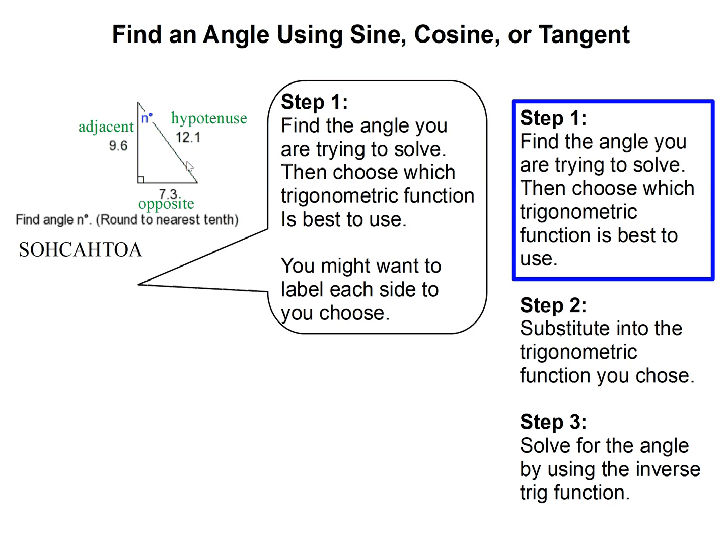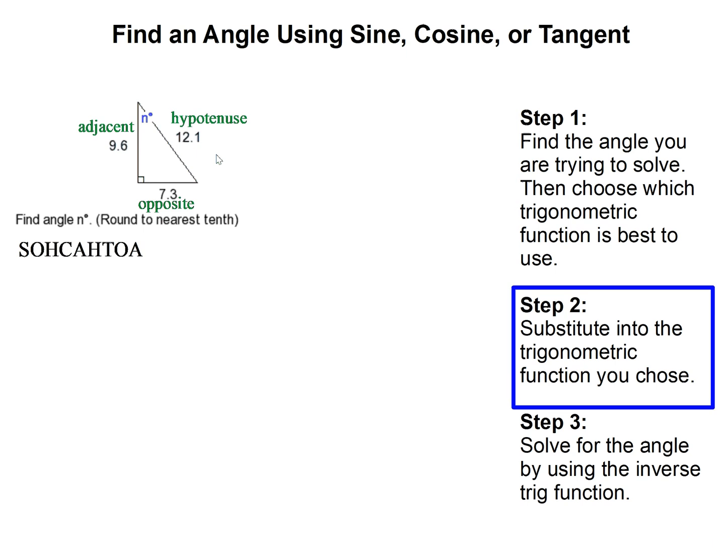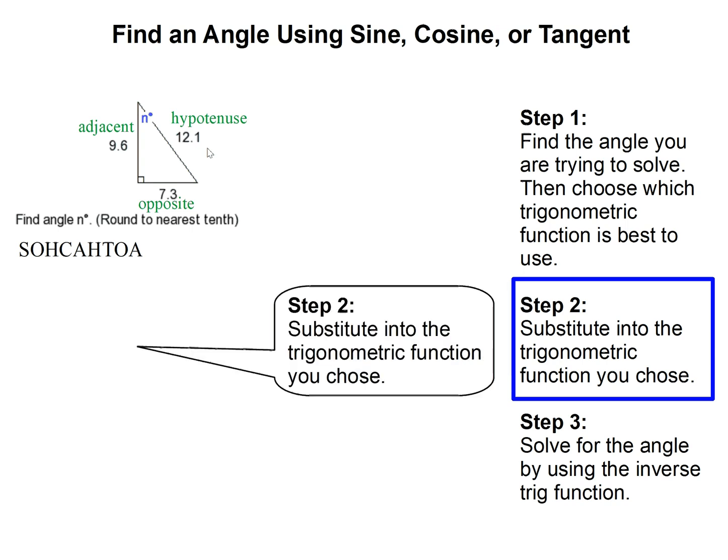Sometimes people like to label the sides, but after you do it a few times you'll be able to recognize it right away. Then what you're going to do is substitute the values you chose into one of the trigonometric functions. So now I wrote them out.